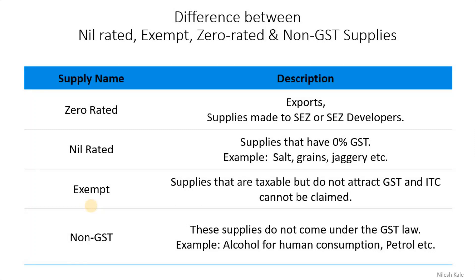The GST council or the government can through notification give the list of exempted goods and services. Now, non-GST supplies do not come under GST law because they are non-GST goods or services. For example, alcohol for human consumption — the constitution itself has kept alcohol out of GST — but petroleum products are included in GST, though GST is not currently applicable on them as it is a state matter.